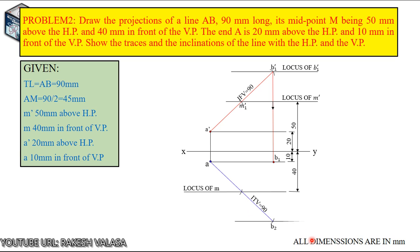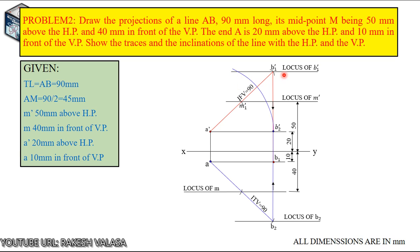Now draw the locus line — this is the locus of B2 and B. Draw the projector from B2 to the locus of A dash — give the name B2 dash. A dash to B2 dash is the length of front view. Now take the engineering compass, take A dash to B2 dash length as radius with A dash as center. Draw the arc from B2 dash to the locus of B1 dash. This arc meets the locus of B1 dash at B dash point. Now join A dash and B dash — this is the final front view.